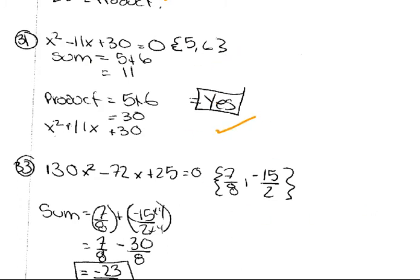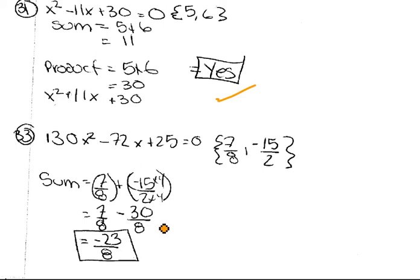For this one, you added them together, and you got minus 23 over 8. So that means it should be the same as 72 over 130, which it's not. So this is not correct. This answer is not correct according to your information.